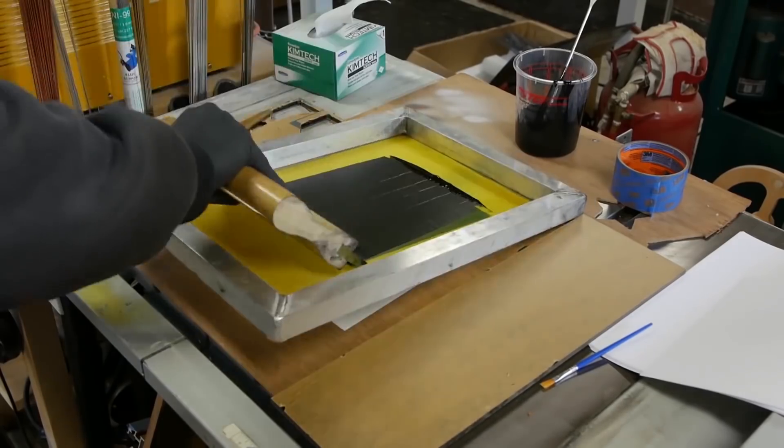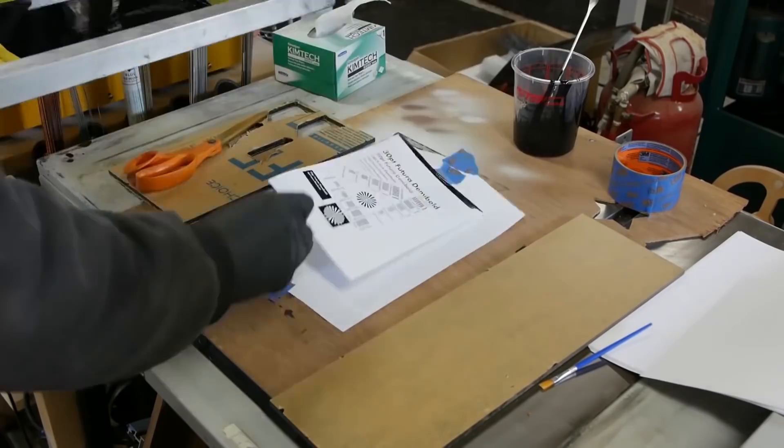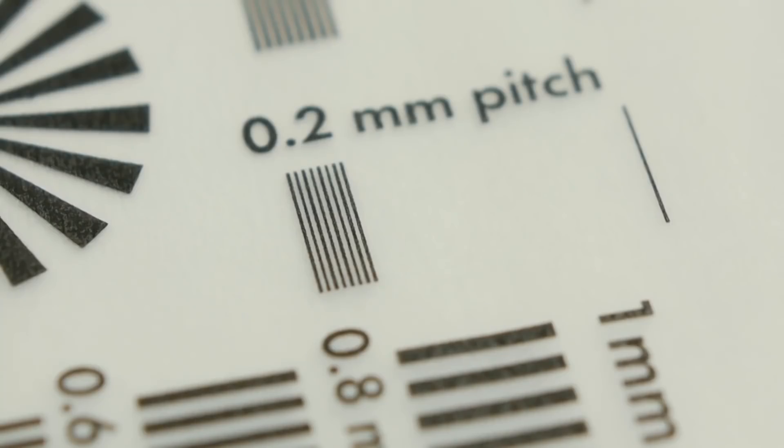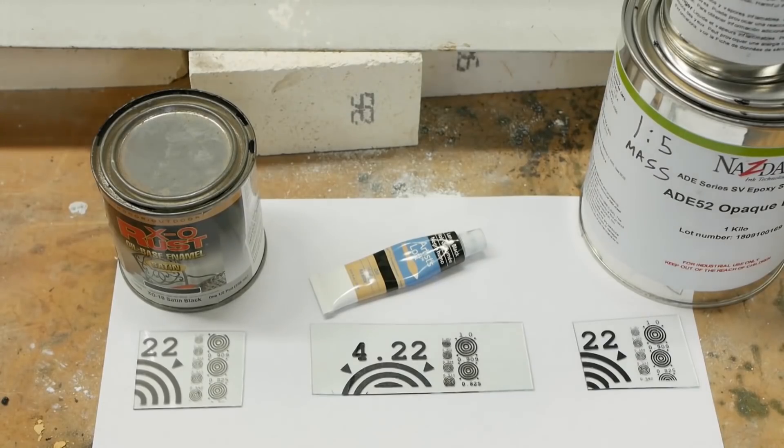Similarly, on Applied Science, Ben Krasno runs through his setup for high resolution screen printing with more of an emphasis on printing with epoxy paints that will stick to metal, glass, and circuit boards.